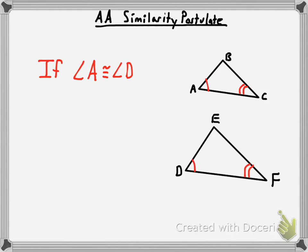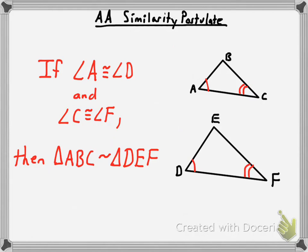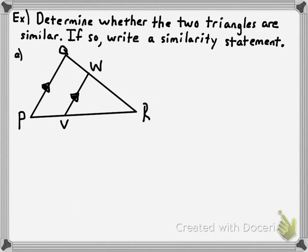To write out the postulate formally: if angle A is congruent to angle D and angle C is congruent to angle F, then the two triangles are similar to one another. The new skill I need you to have is to analyze two triangles, determine whether they have two pairs of congruent angles, and if so, conclude that they're similar and do whatever else the question asks.